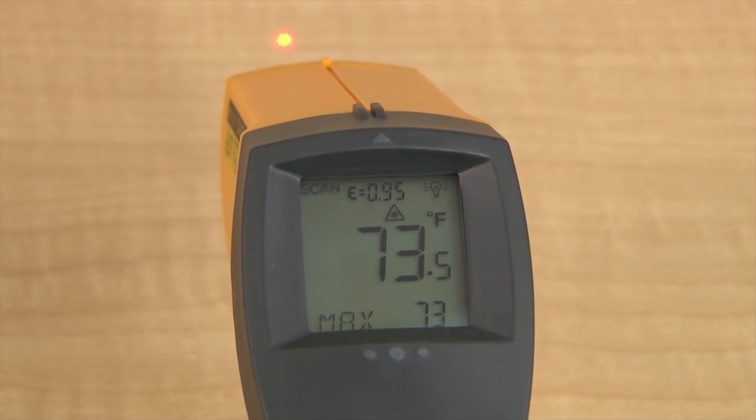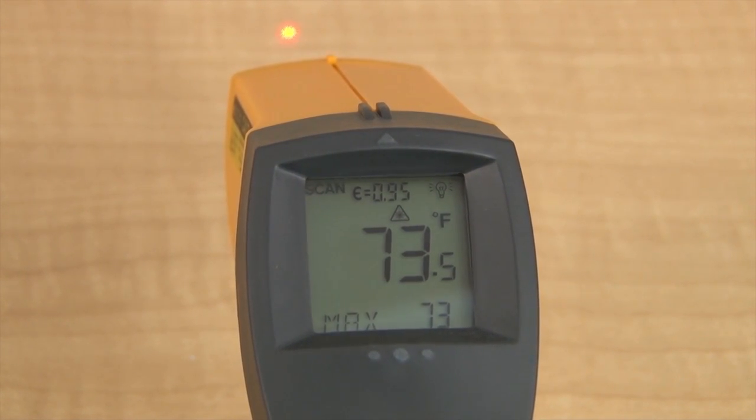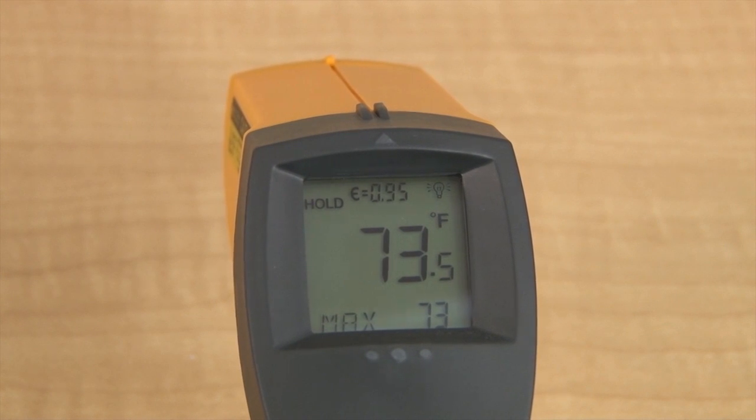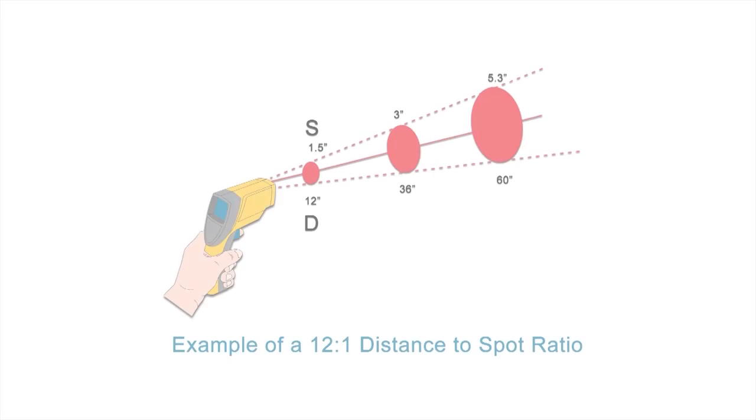Typical response time from detection to display on an IR thermometer is about 0.5 seconds, and the maximum measuring distance can vary based on the quality of optics and atmospheric conditions.